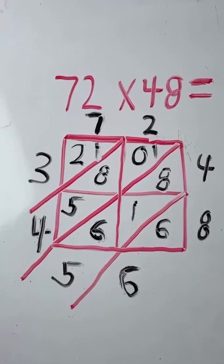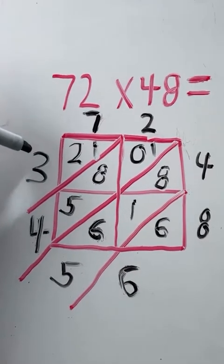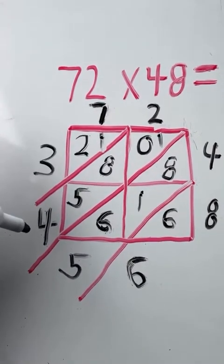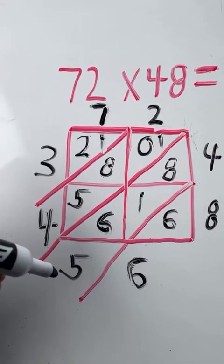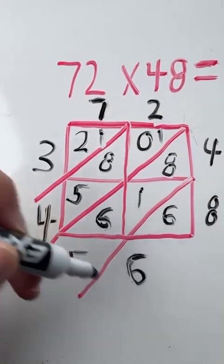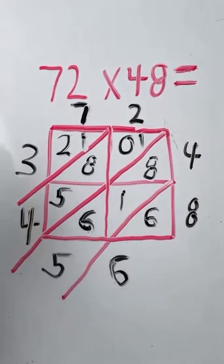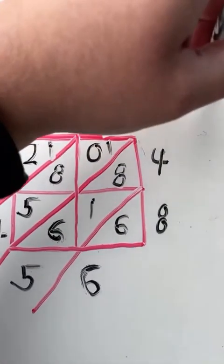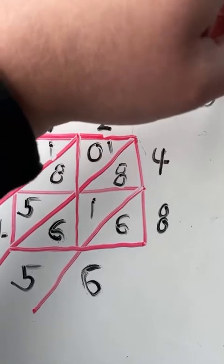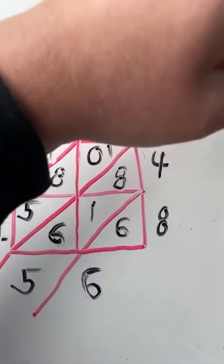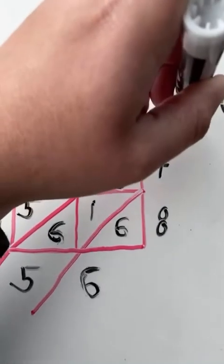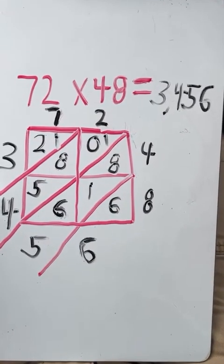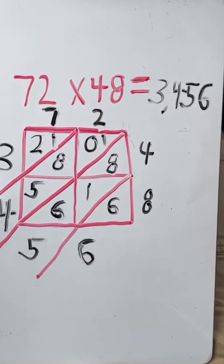Now we have our final answer and we are going to read the answer from left to right. We have a three in the thousands place, a four in the hundreds place, a five in the tens place, and a six in the ones place. So our answer is 3,456. So 72 times 48 equals 3,456.